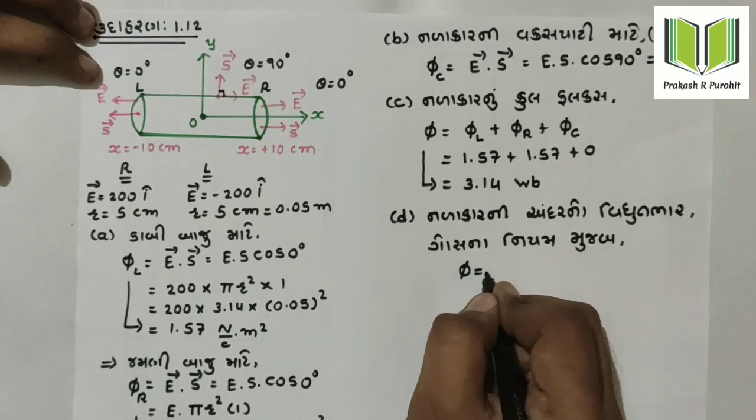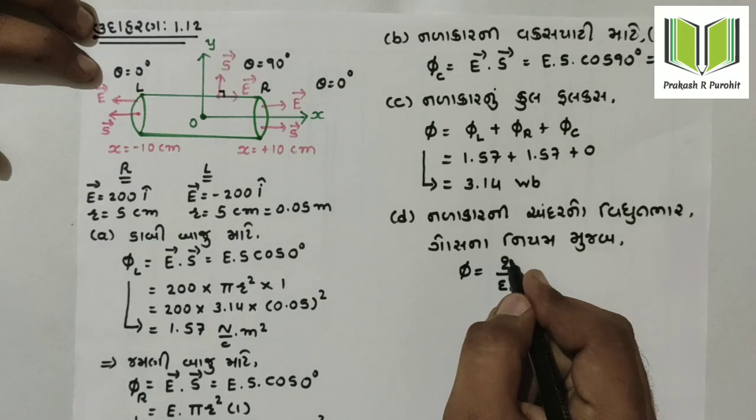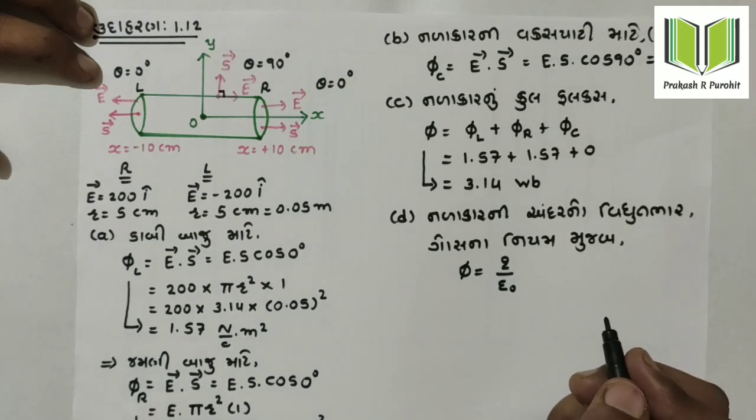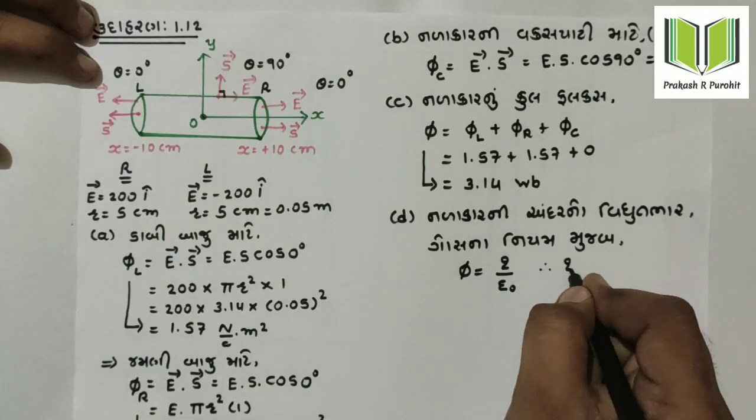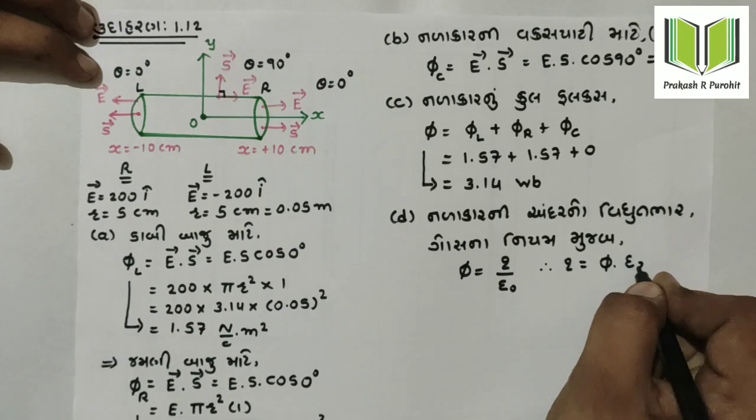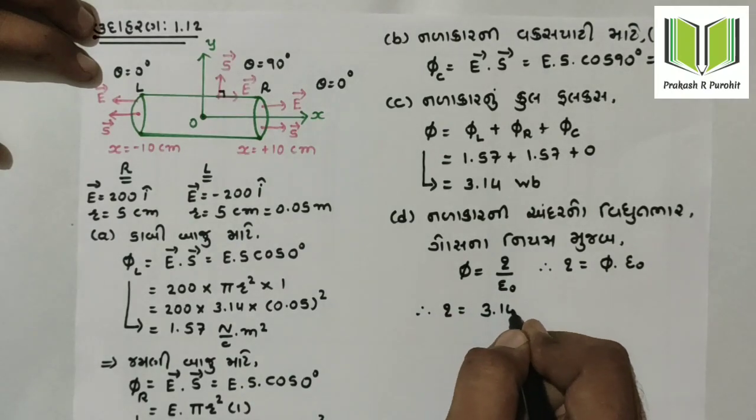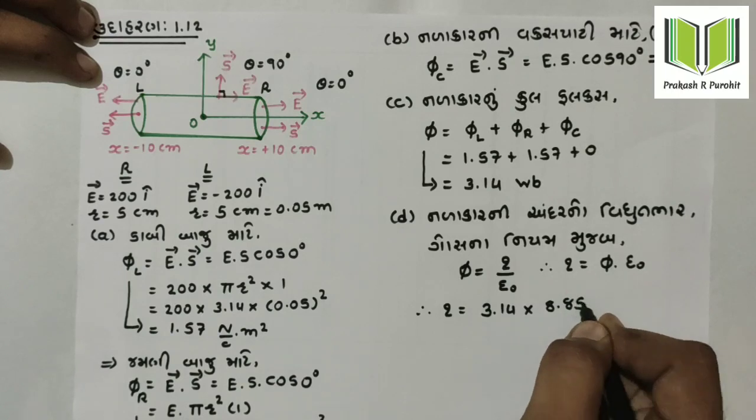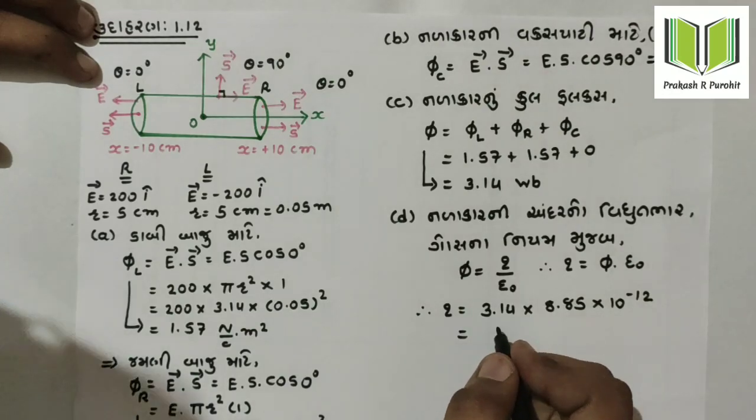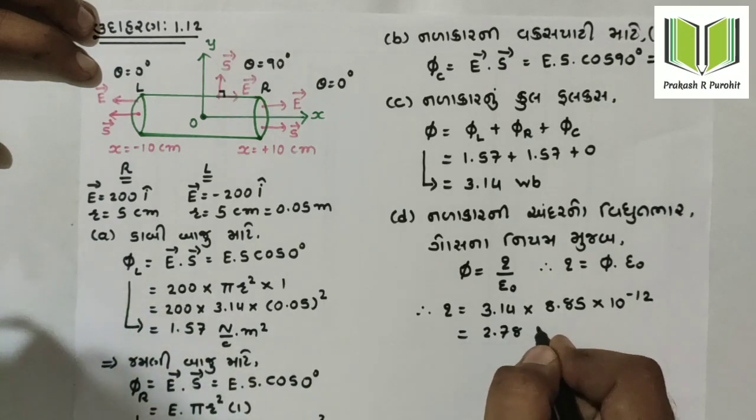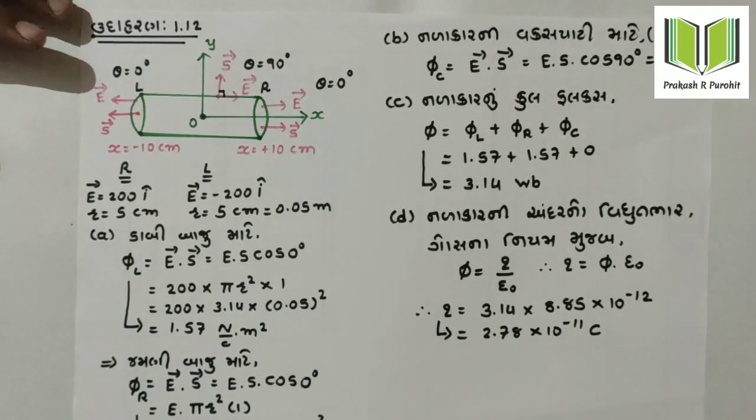Total flux Φ equals Q by epsilon-0. To find charge Q, we write Q equals Φ times epsilon-0. That's 3.14 times epsilon-0, which is 8.85 times 10⁻¹². Multiplying these gives us 2.78 times 10⁻¹¹ coulombs. This is the total electric charge inside the cylinder.